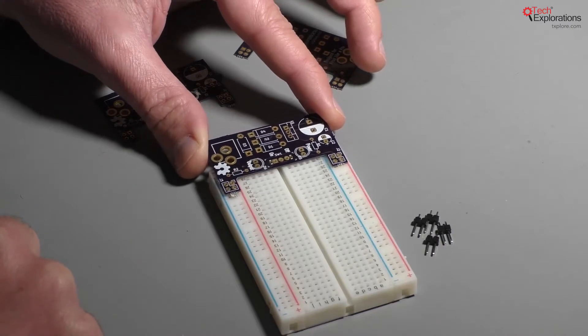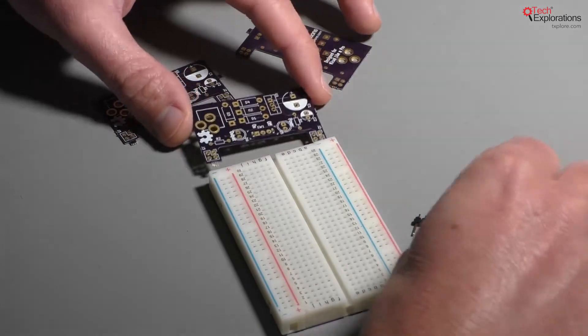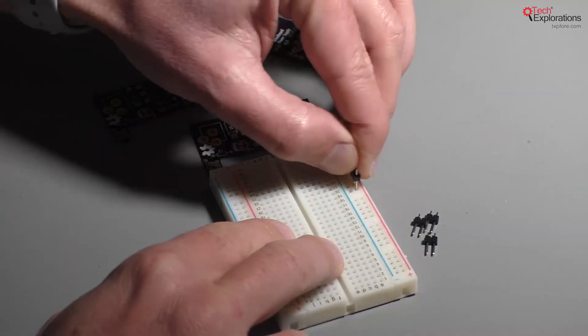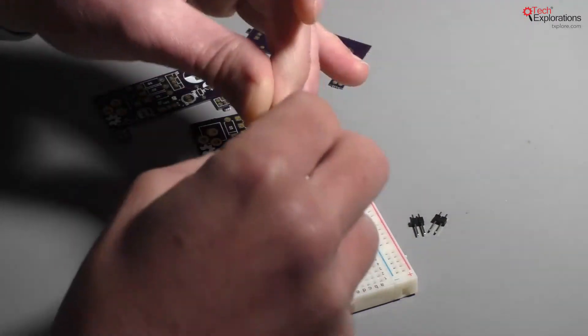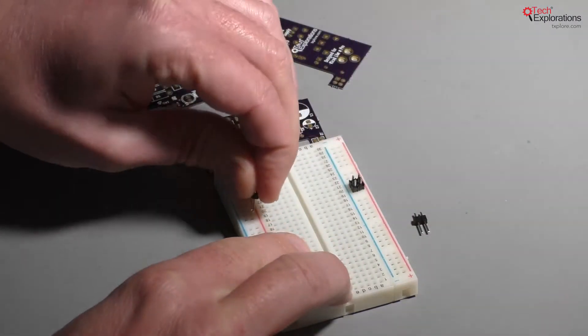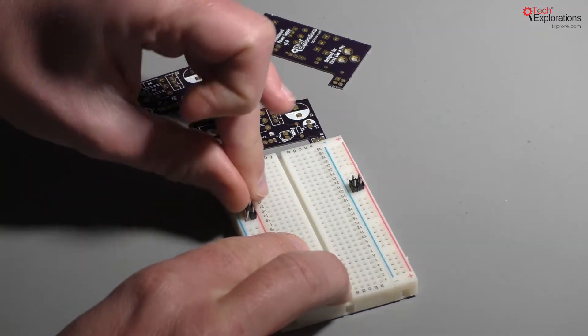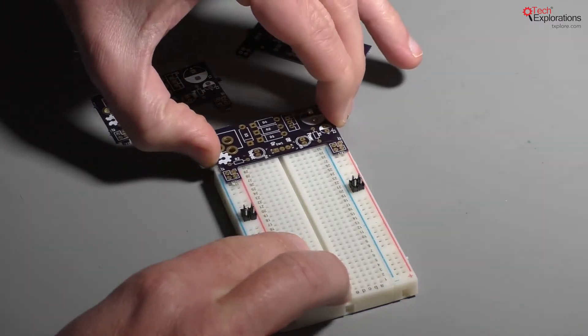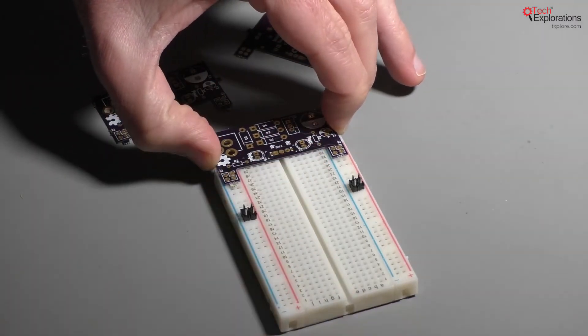So let's try it out. I'm going to plug in the headers, say around here on one side and here on the other side. Of course, normally with a breadboard power supply PCB you'd plug it in at the edge of the breadboard so you leave enough space for the various components, but for the sake of this testing this is just fine.